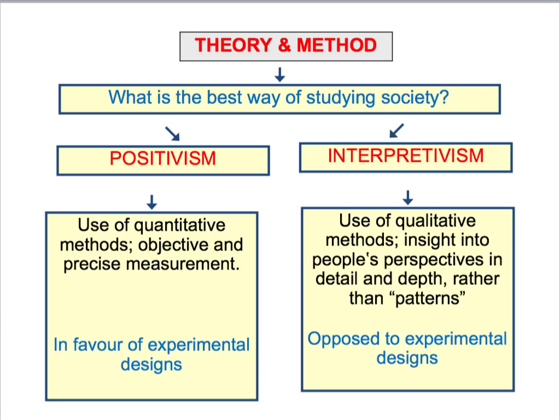The interpretivist argument is that people are very different from the usual subject matter of experiments, such as chemicals and plants. The key difference is that people have consciousness and they usually know that they're taking part in an experiment, and because of this knowledge their performance may therefore be distorted by their desire to impress the experimenter.